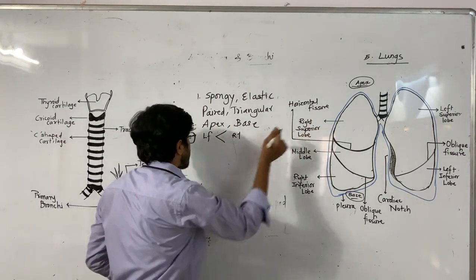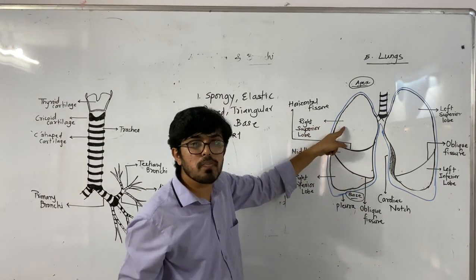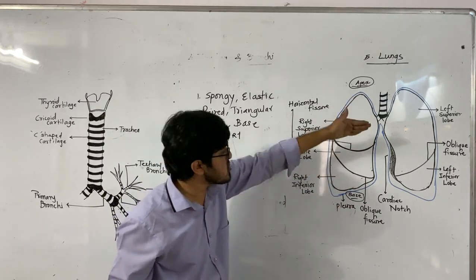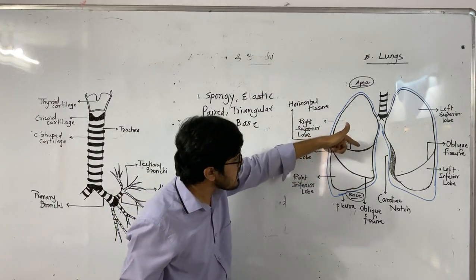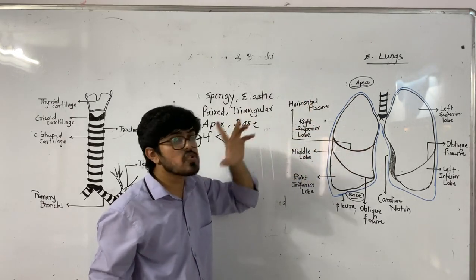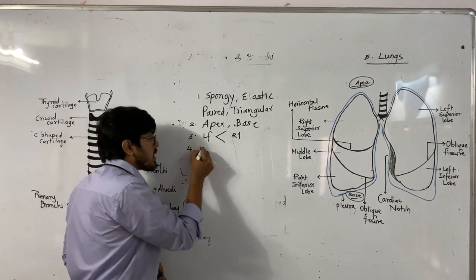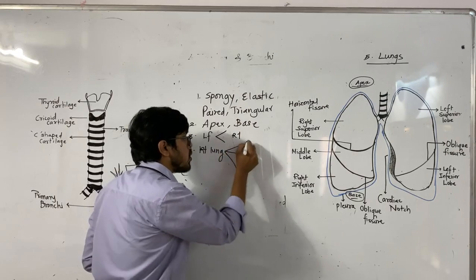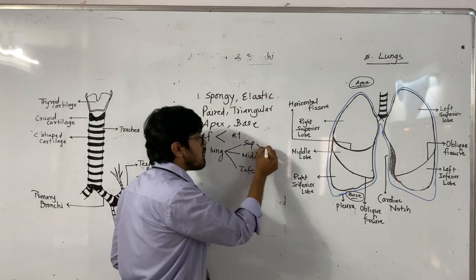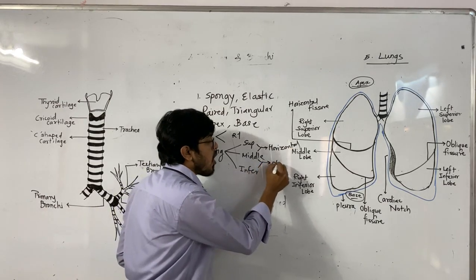The right lung has three lobes: the uppermost is the right superior lobe, then the middle lobe, and finally the right inferior lobe. The superior and middle lobes are separated by a horizontal fissure, while the middle and inferior lobes are separated by an oblique fissure.